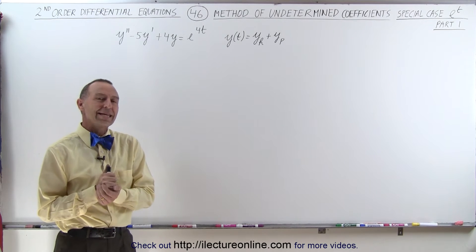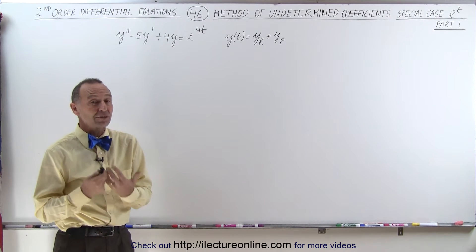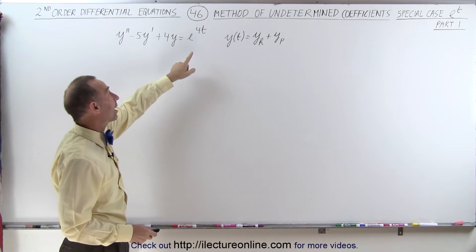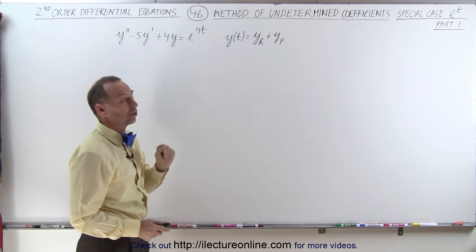Welcome to ElectronLine. Here we're going to consider a special case when g of t, the function on the right side of the equal sign, is an exponential function.